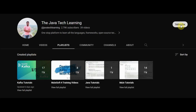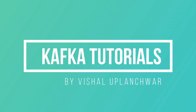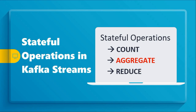Subscribe to the Java Tech Learning channel to learn more about new videos. Hi guys, this is Vishal. In my last video, I discussed Kafka Stream Stateful Operations and how to apply the count method. This one will be a progression of the same concept where I will illustrate the aggregate method. I am going to calculate a running average of order price for buy stock orders by streaming an influx of events from the stock order events topic.